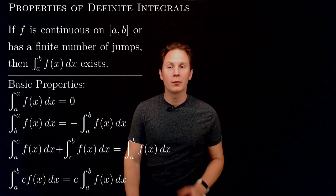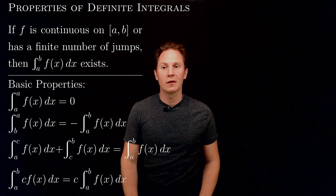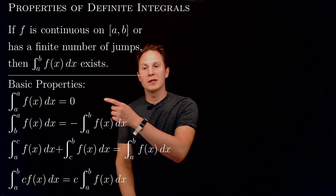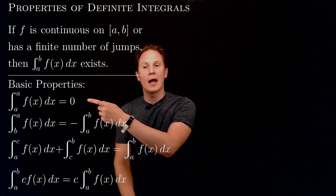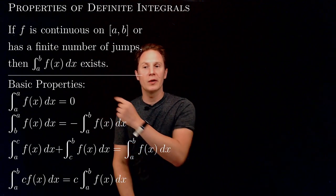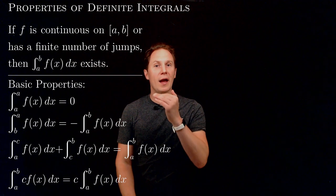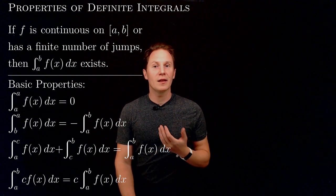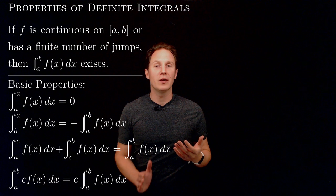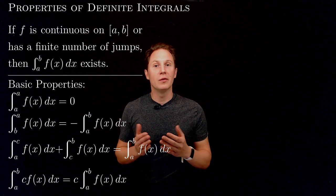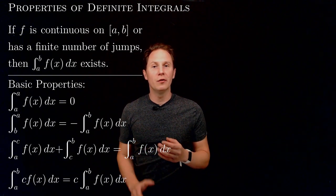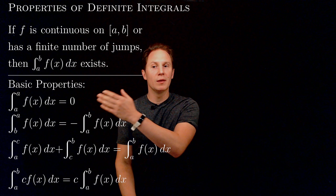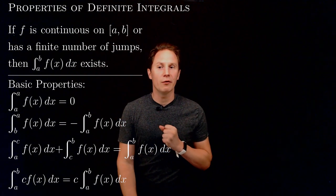Further basic properties of these definite integrals are as follows. If we have the endpoints be the same, so we integrate from a to a of f(x) dx, that means that in the definition — the Riemann sums — the delta x is 0, therefore even in the limit we get 0.